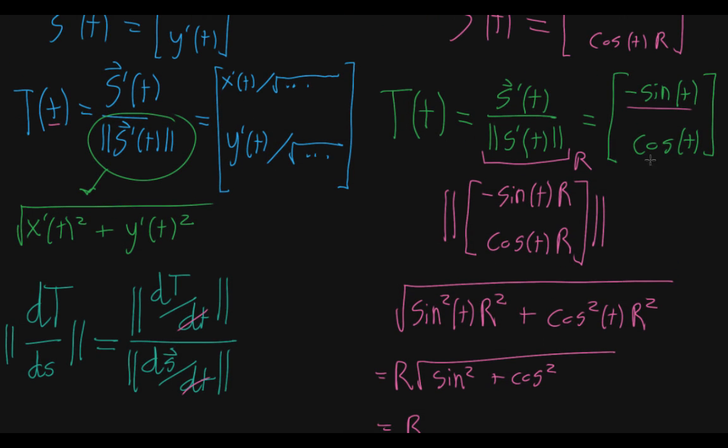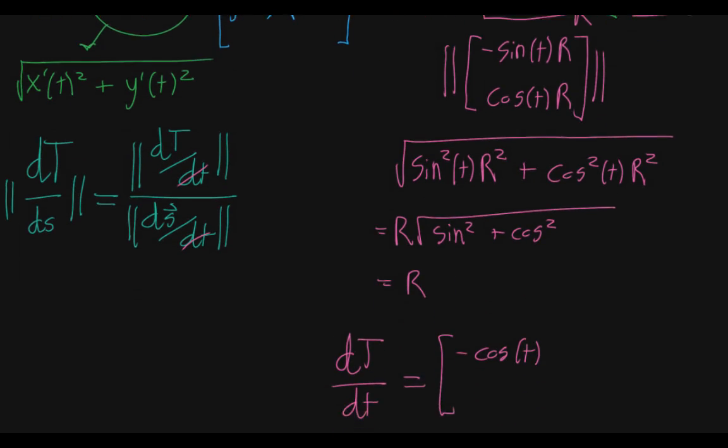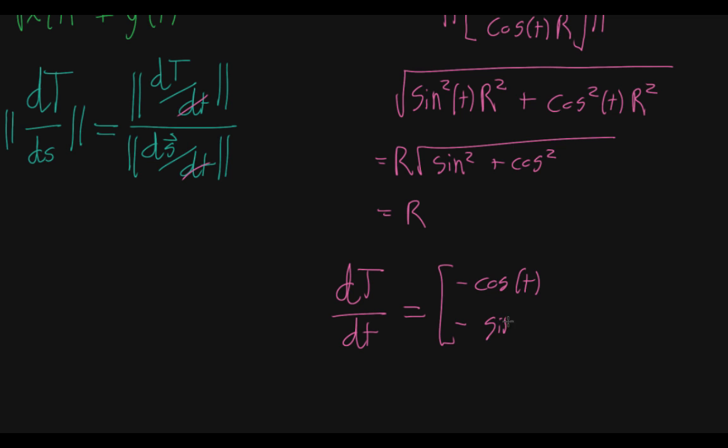The other component, the y component, the derivative of cosine t, as we're differentiating our unit tangent vector function, is negative sine of t.